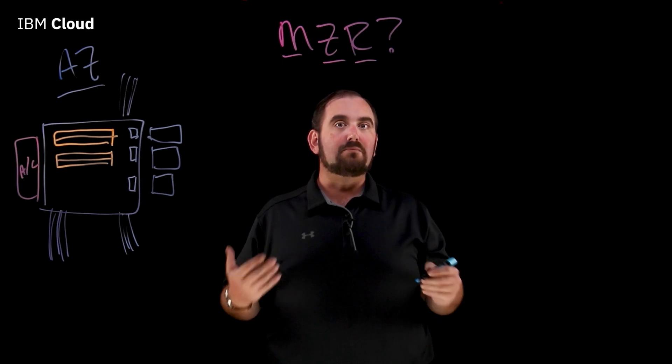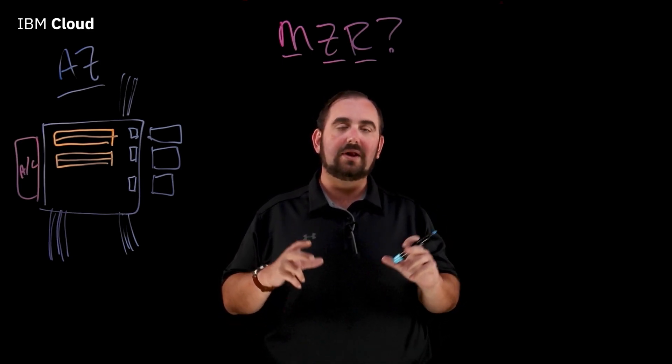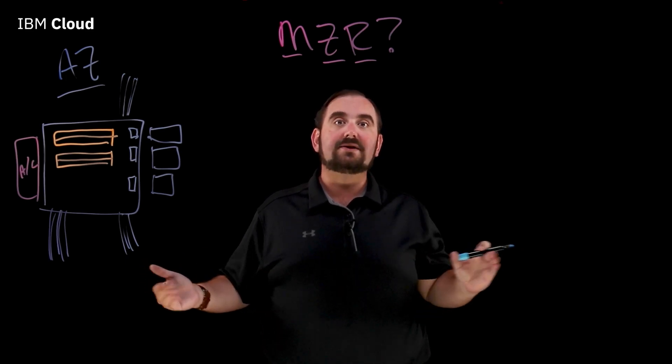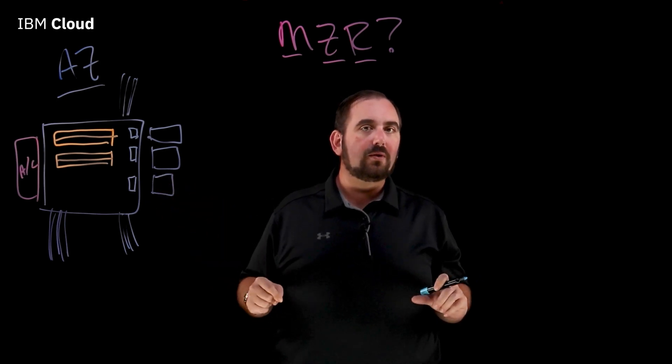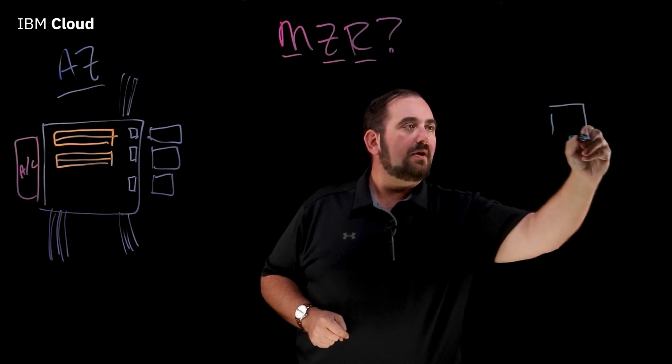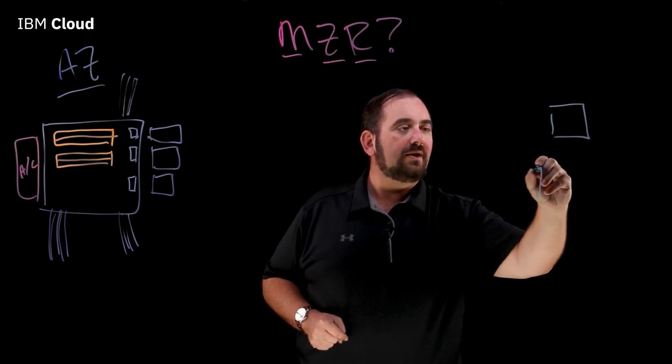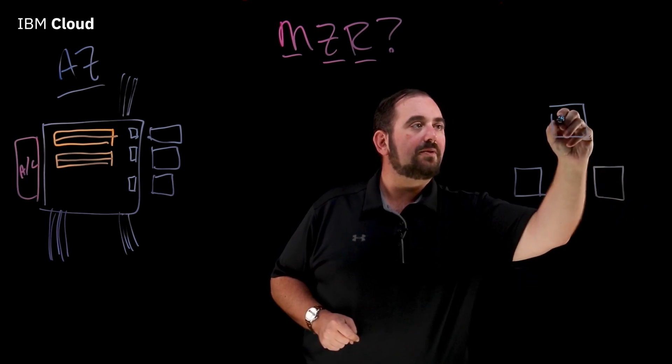Well, an MZR, a multi-zone region, is a single geography. So, a single area like Dallas-Fort Worth or Frankfurt or London where we will have three or more availability zones. And so, we're going to have availability zone one, availability zone two, and availability zone three.